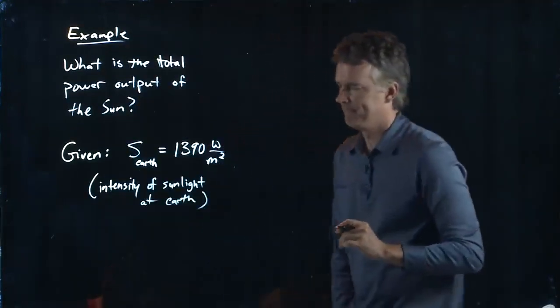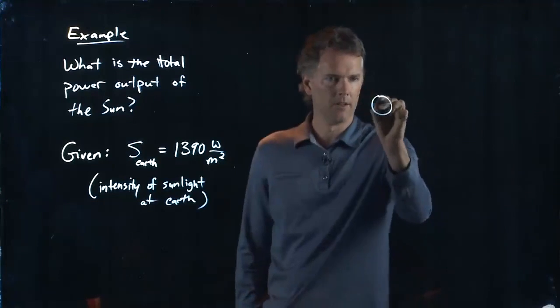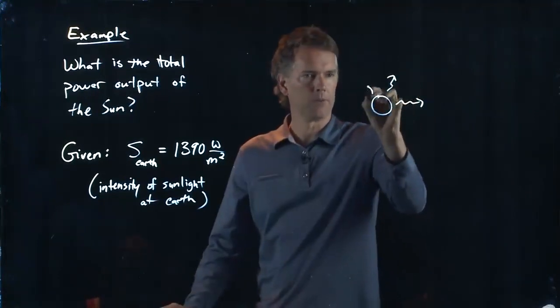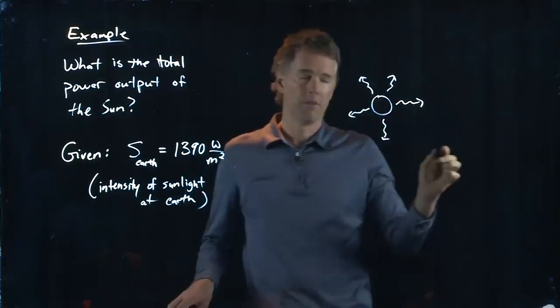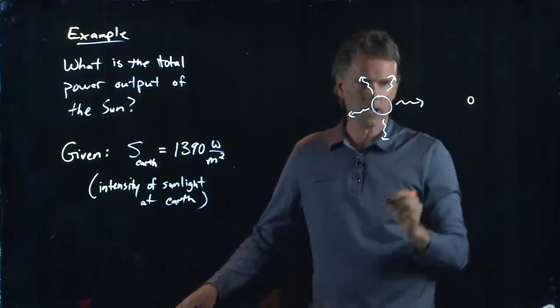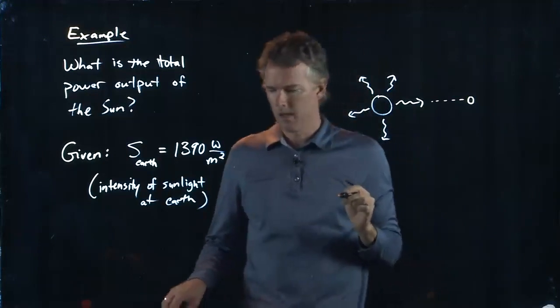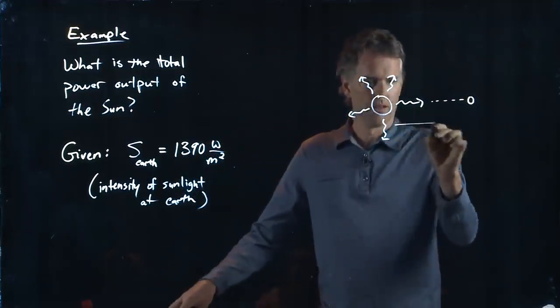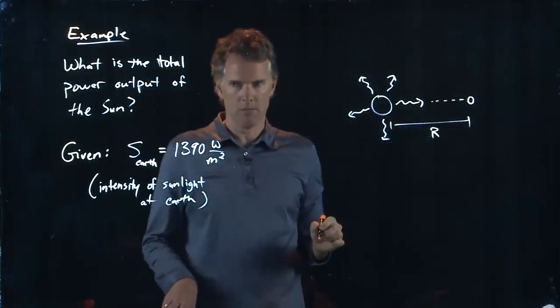Let's draw a picture of this thing. Here's our sun. It is spitting out electromagnetic waves in all directions. Some of those we collect right here on the Earth. And we know that we are a distance, capital R, away from the sun.